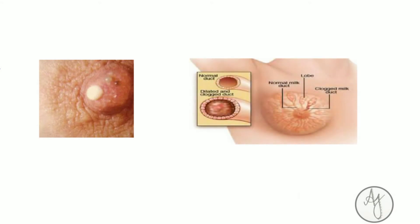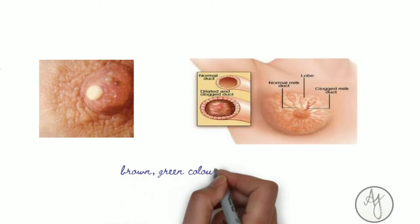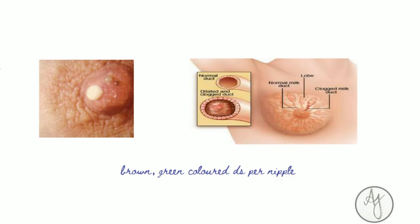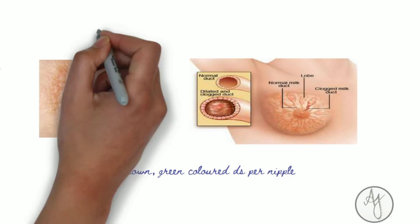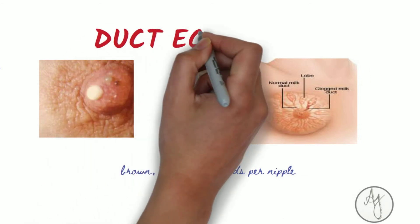If there is brown-green color discharge from the nipple, it is mostly a case of duct ectasia.